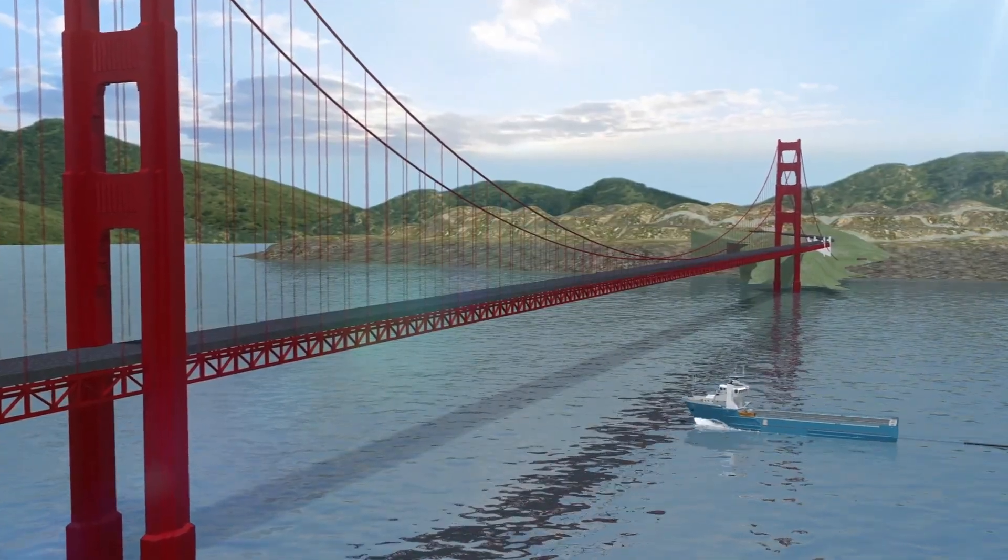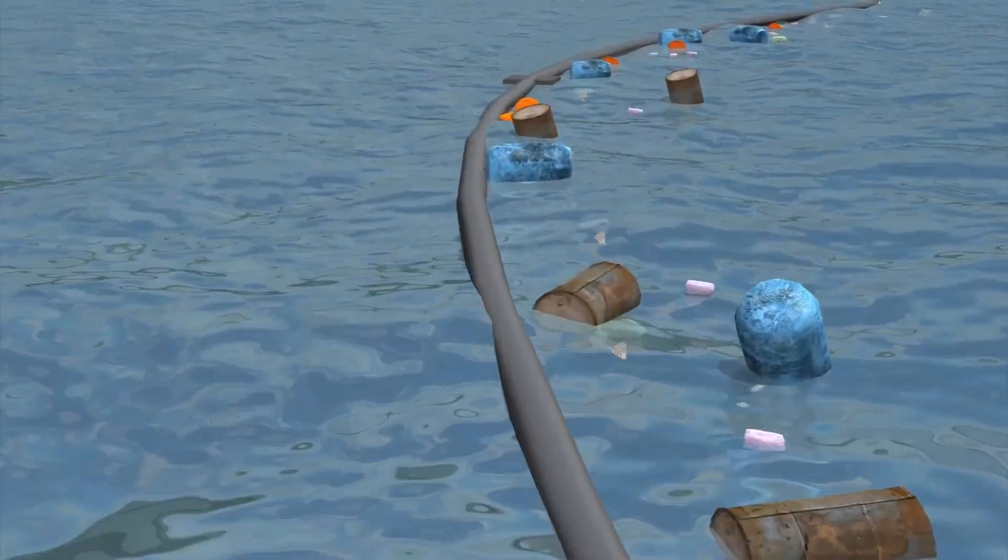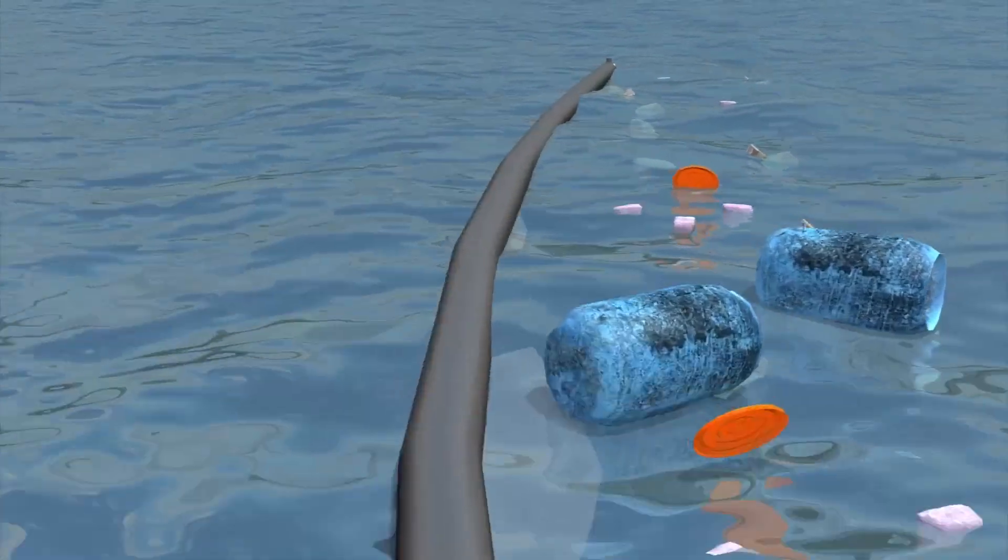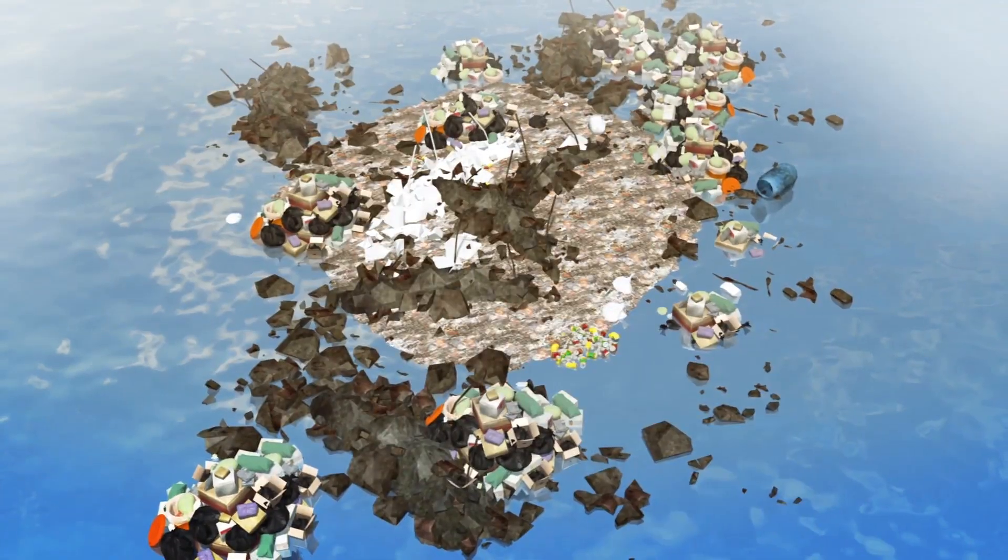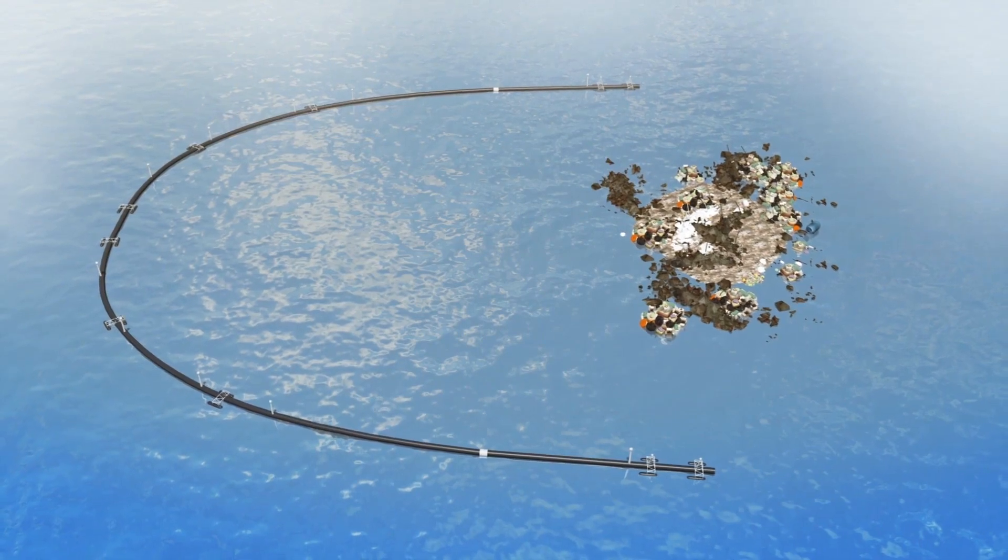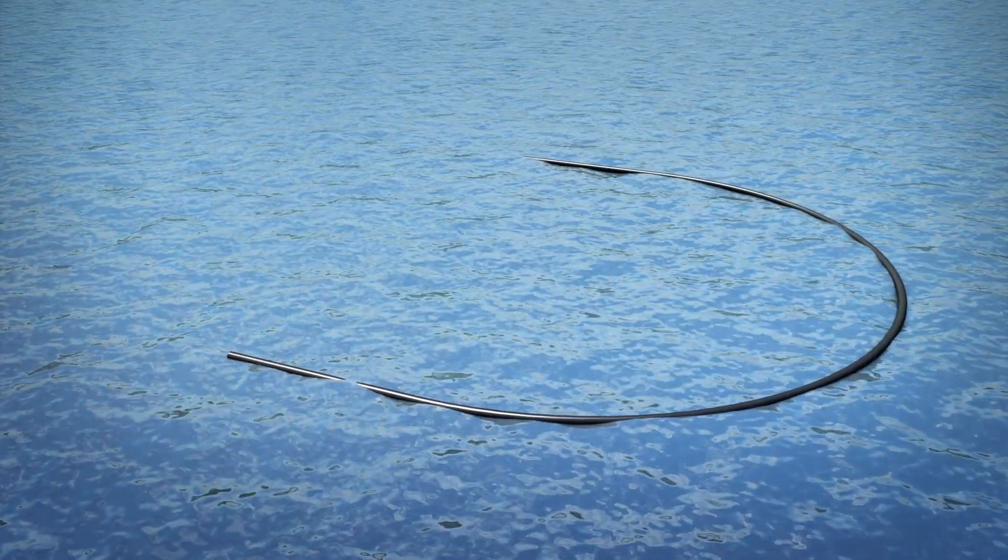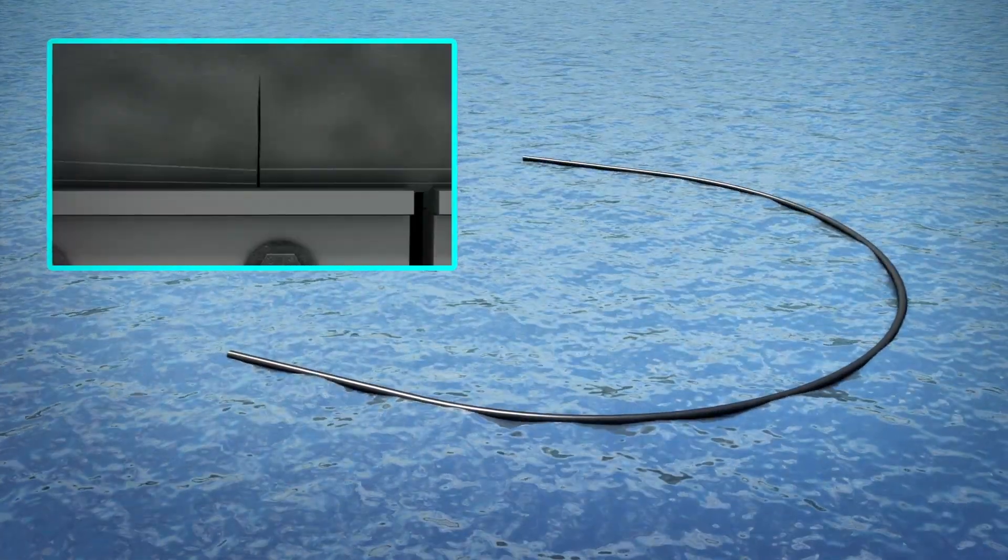Last September, System 001 was towed from San Francisco to the patch, but problems arose during its first cleanup attempt. While the system managed to catch plastic waste, it struggled to maintain sufficient speeds and was unable to retain the collected trash. The floating boom also broke apart under constant winds and waves, reports the Guardian.